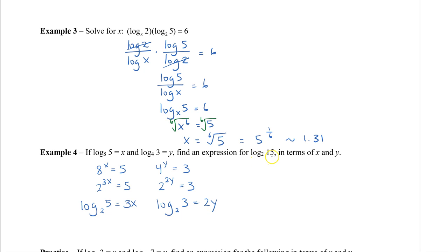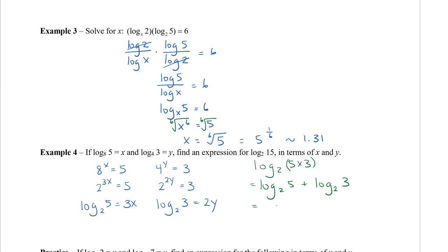The expression we want is log base 2 of 15. We rewrite 15 as 5 times 3, so log base 2 of 15 equals log base 2 of 5 plus log base 2 of 3, using the multiplication rule for logarithms. Substituting our earlier results, log base 2 of 5 equals 3x and log base 2 of 3 equals 2y. Therefore, log base 2 of 15 equals 3x plus 2y.